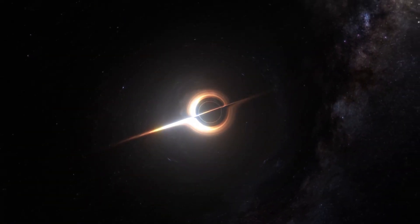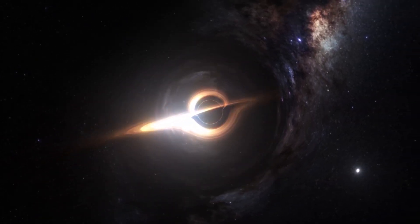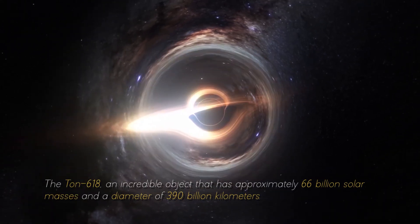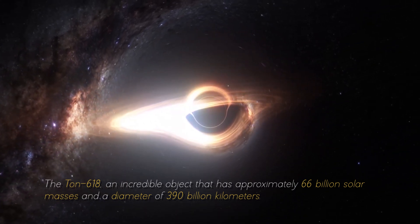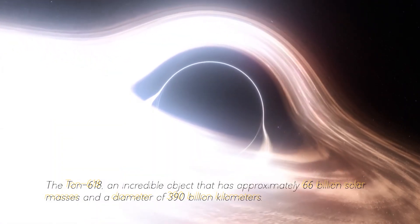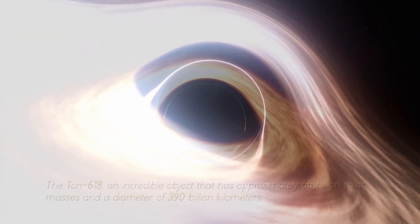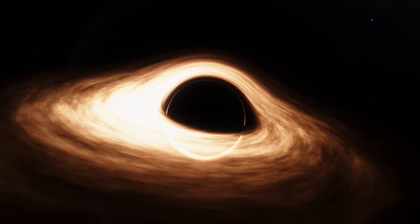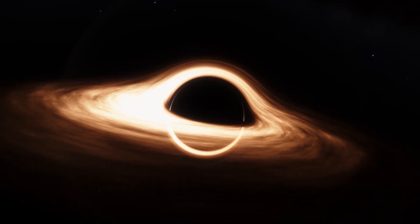Not everything ends here. This star cannot be compared with the most massive black hole in our cosmos, the Ton 618, an incredible object that has approximately 600 billion solar masses and a diameter of 390 billion kilometers. For now, we will stop measuring in kilometers and start measuring in light years.